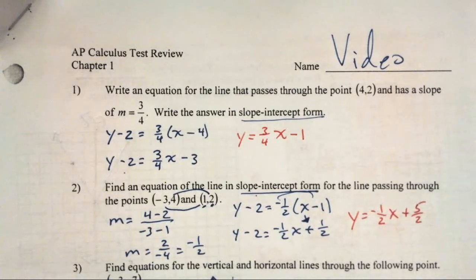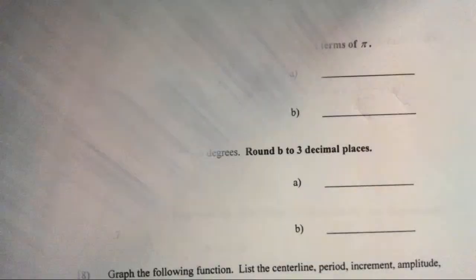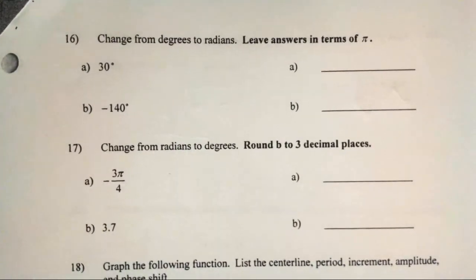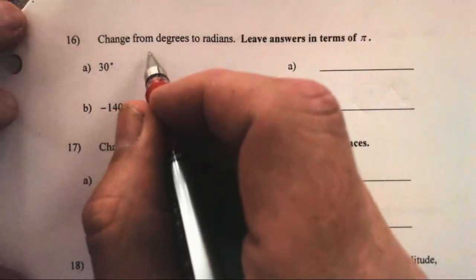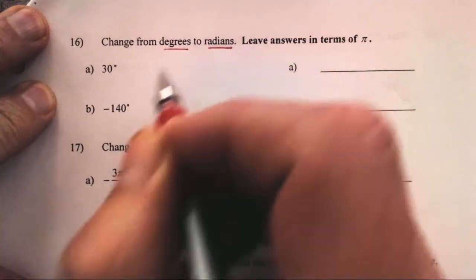Welcome back. This is the third video for our chapter one calculus test review. This is where we started, and we are now moving on to number 16. Hopefully this will wrap it up and you're going to be comfortable with all this material. We are supposed to change from degrees to radians.